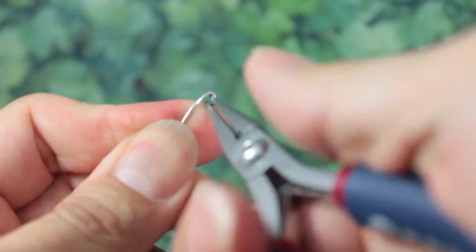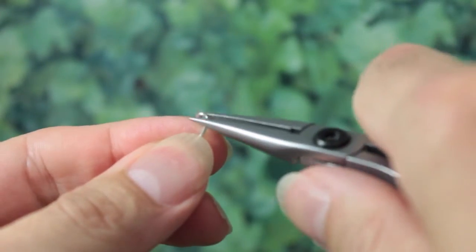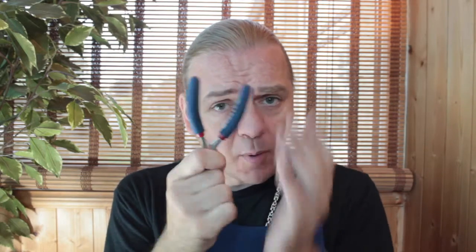But the problem is, sometimes picking up an object just isn't enough. You need to be able to bend it or twist it or manipulate it or apply some force. So what I want is, I want the precision of a pair of tweezers but I also want the grip and the strength of a pair of pliers.